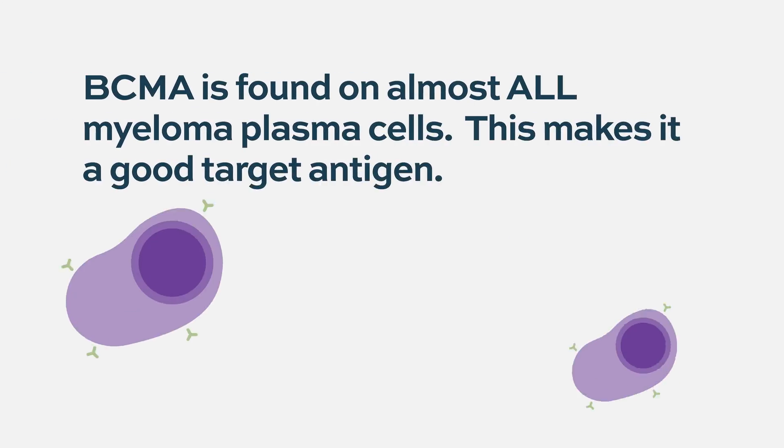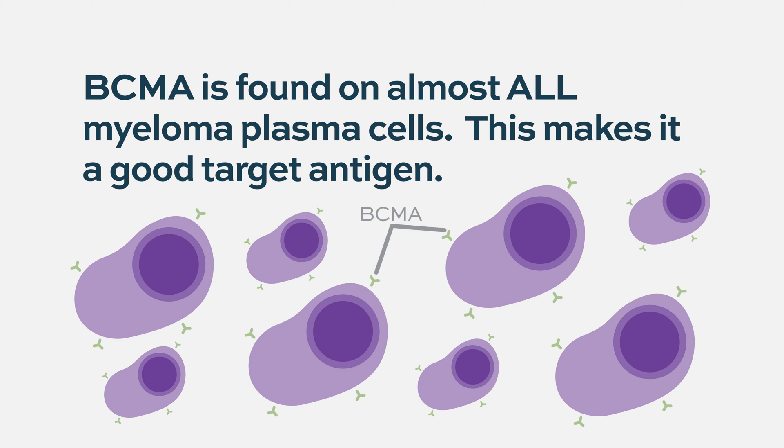CAR T-cells are bringing a lot of hope to patients with multiple myeloma. B-cell maturation antigen, or BCMA, is a target that people are really excited about, because it's expressed in essentially all myeloma cells and is not expressed in normal cells in general. This makes it something really special in myeloma. There are three general ways to target BCMA that are either available or being explored.